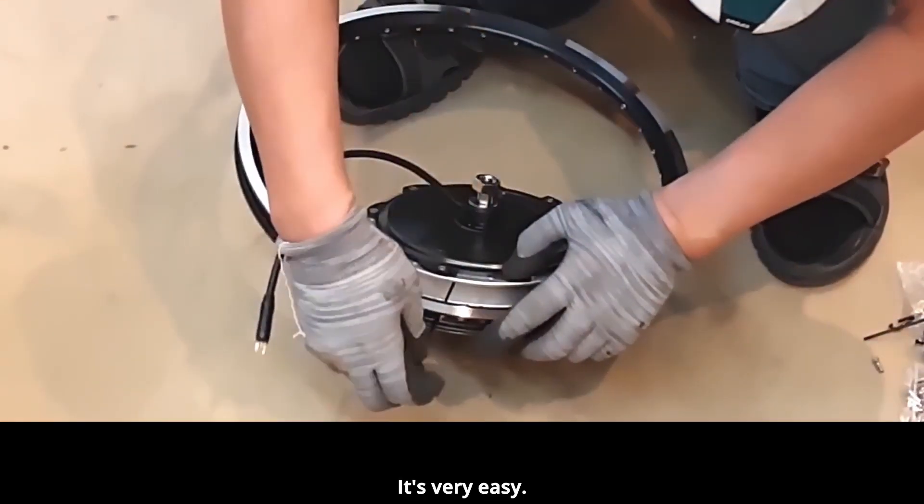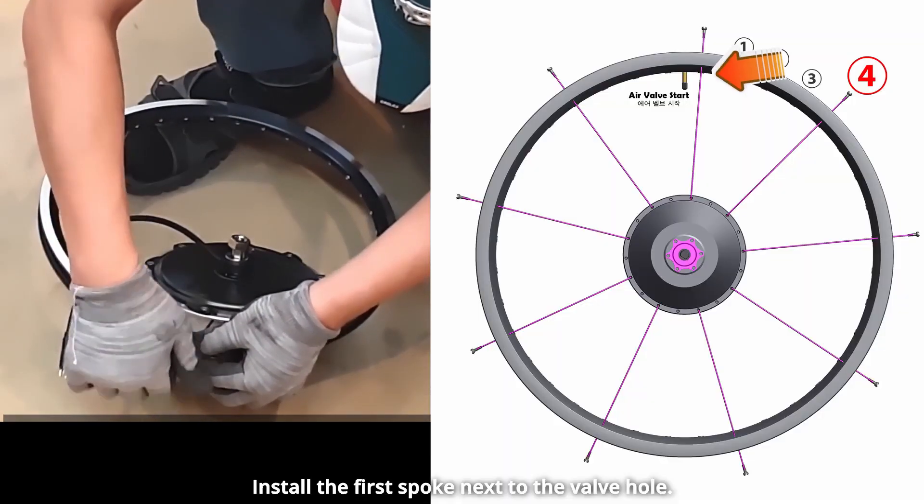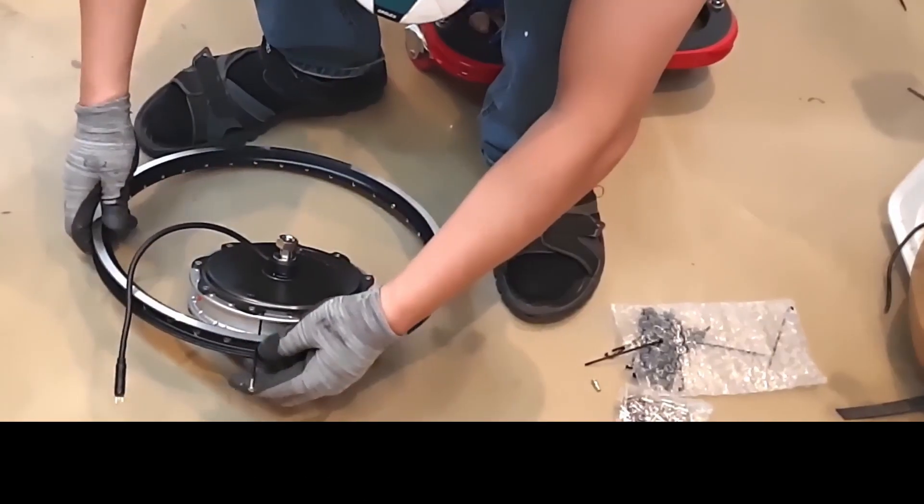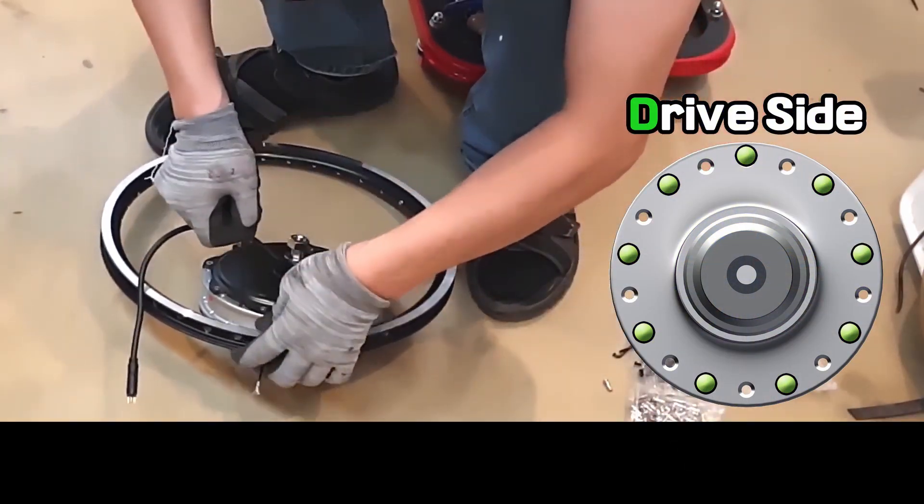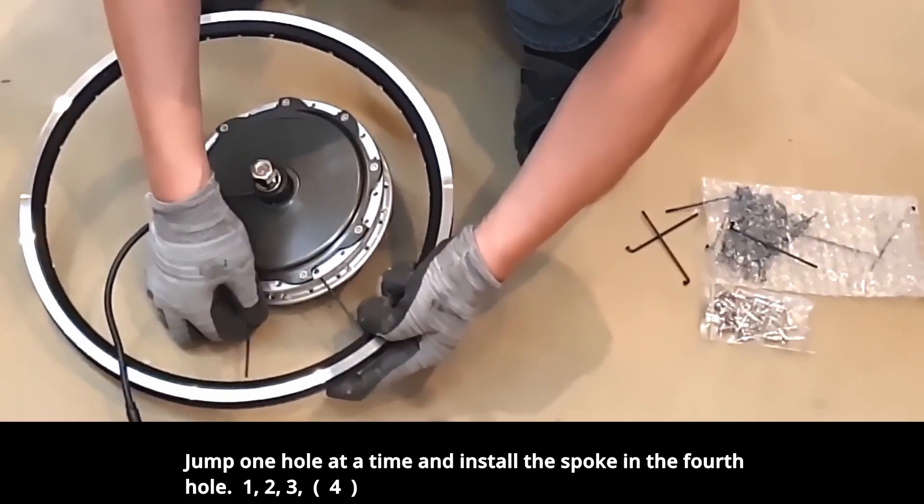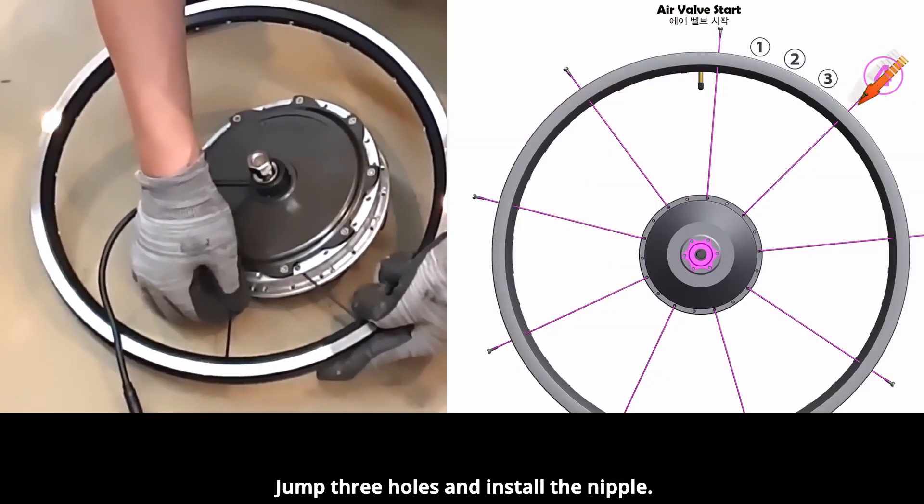It's very easy. Install the first spoke next to the valve hole. Jump one hole at a time and install the spoke in the fourth hole. Jump three holes and install the nipple.